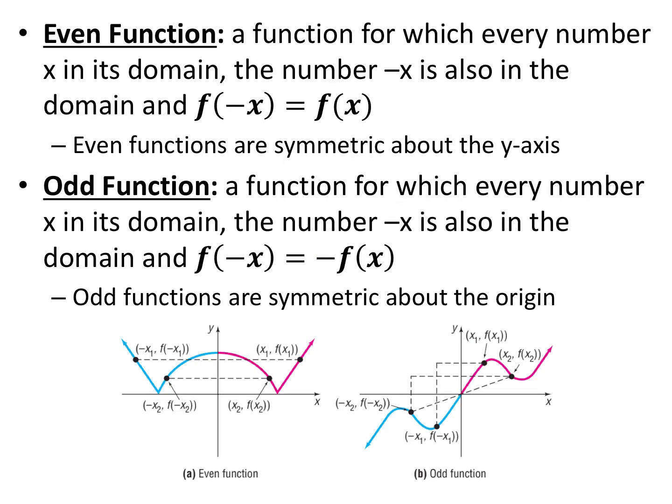The last property we'll discuss is even and odd functions, which is similar to the symmetry discussed earlier but specific to functions. An even function is one where for every x in the domain, negative x also exists and f(-x) = f(x) — the two y-coordinates are equal. Even functions are symmetric about the y-axis. An odd function has f(-x) = -f(x) — the y-coordinates are opposite — and odd functions are symmetric about the origin. There's no x-axis symmetry for functions, because one x-coordinate can't have multiple outputs.